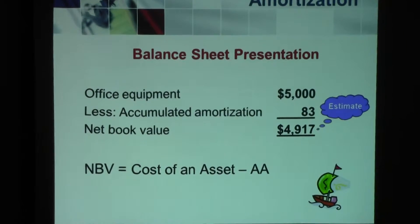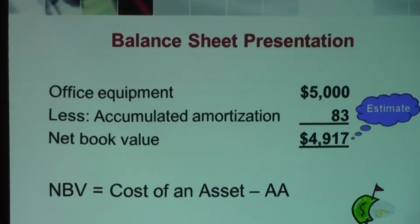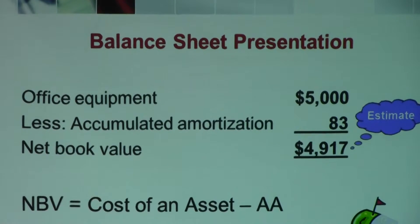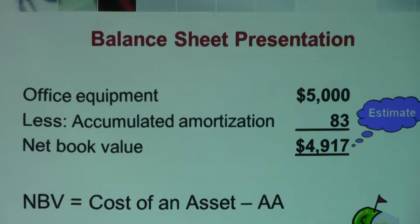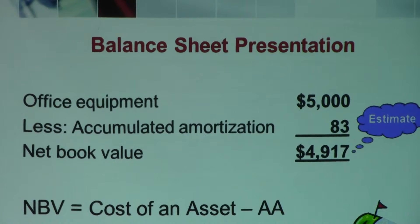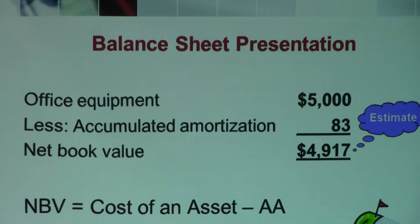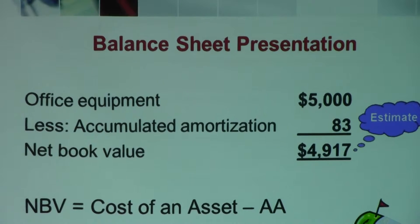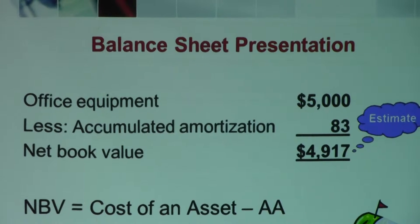On the balance sheet, you have the original price of the asset, then you subtract the accumulated amortization, giving you the net book value. The net book value represents the asset's value after all amortization has been taken into account. Accumulated amortization is an account that accumulates all amortization charges over the years for that particular asset.